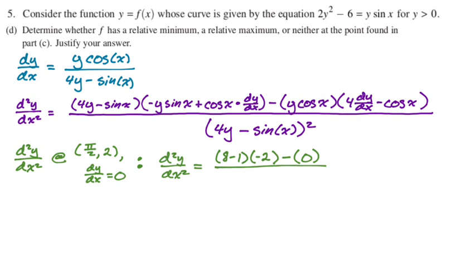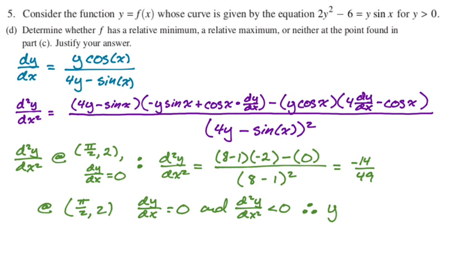The denominator is, it's really just the 8 minus 1 again. So 8 minus 1, and then the quantity squared. So this will give us negative 14 over 49, which you could simplify to negative 2 sevenths, but you don't need to. And the key feature of this is that it's negative, right? That is less than 0. So I am ready to say that at the point pi over 2, 2, dy dx is equal to 0. The second derivative is less than 0. And therefore, we can say that y has a relative maximum, right? Because it's concave down and has a horizontal tangent line. That is the second derivative test. So maybe I should have written by the second derivative test, but I didn't.